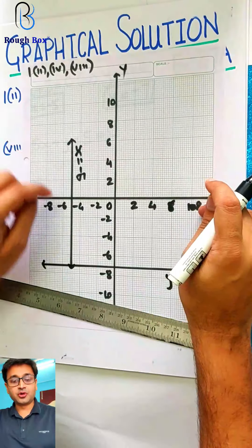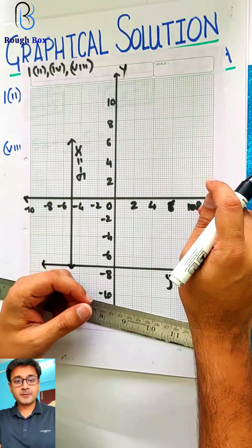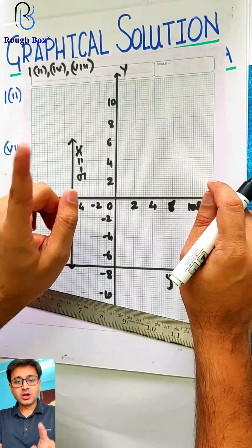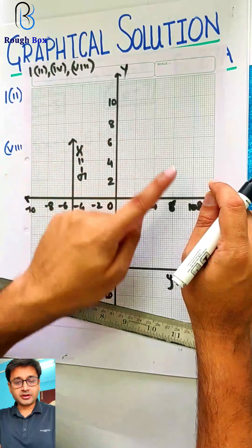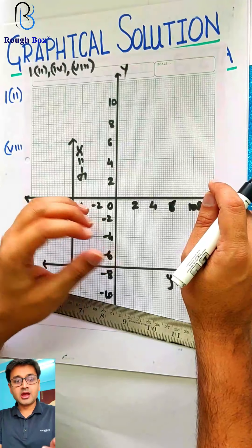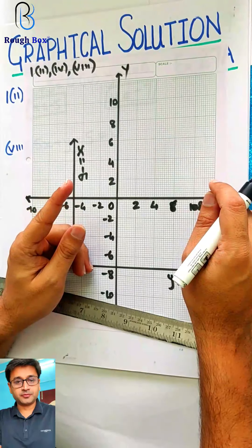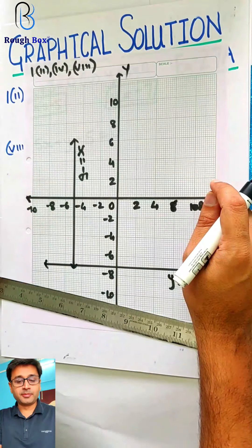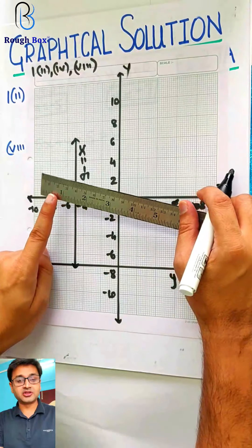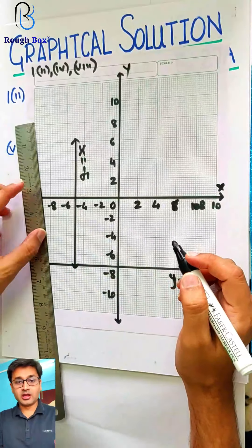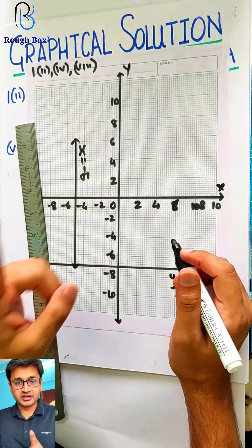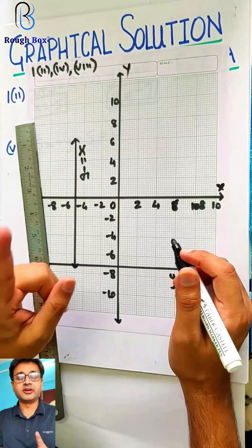Important: in case you don't have graph sheets, don't get stuck. You have two choices. Number one: go on Google and print or type 'graph sheet 2 by 2 centimeter' — don't take 1 by 1 — and take a printout. If you don't have a printer at home, choice two: take your ruled page, draw two lines x and y, and take 1 centimeter as 1 unit on both axes, then start drawing. I don't want anyone to get stuck. When there is a will, there is a way.